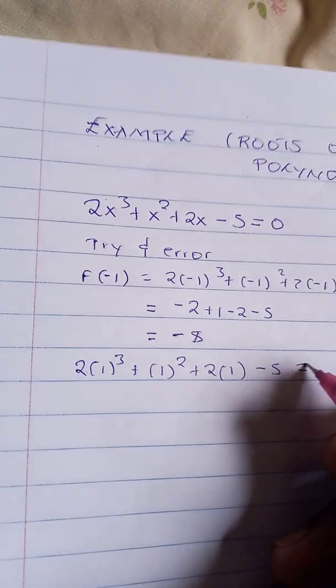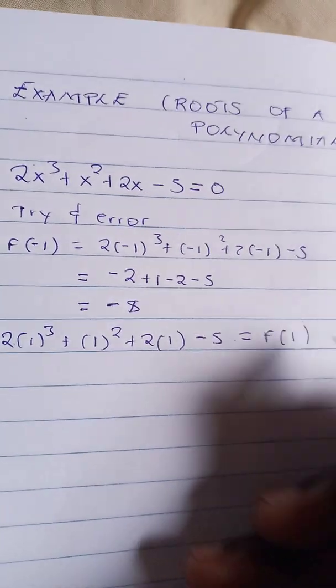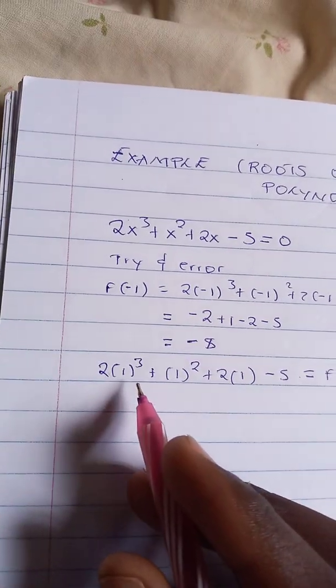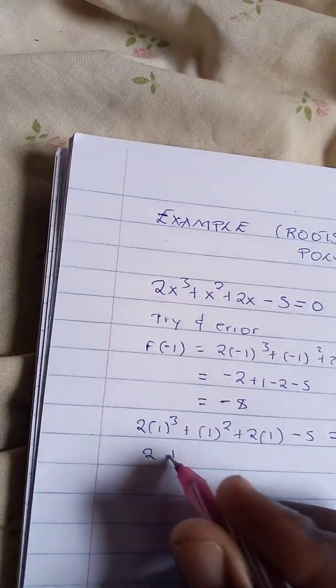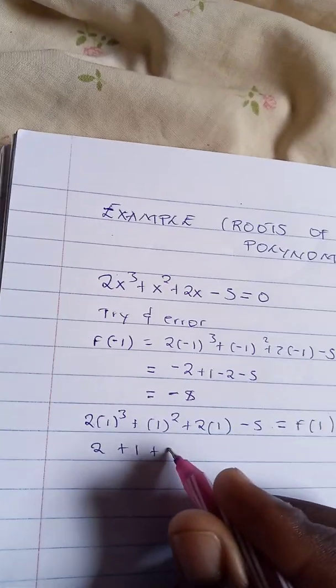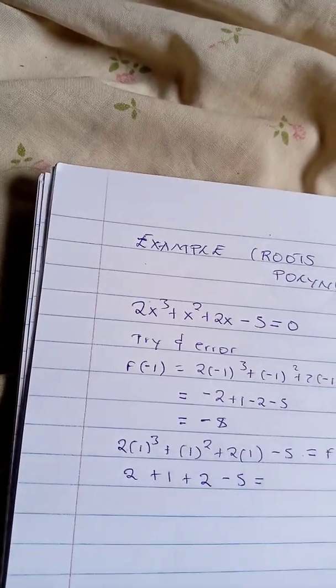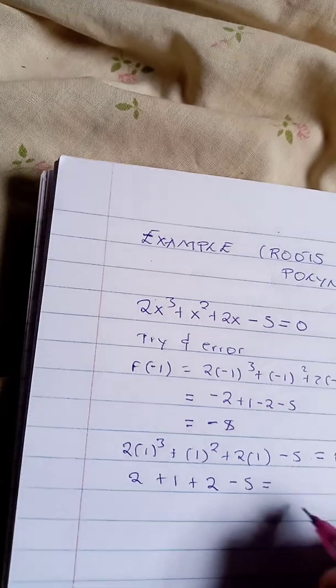So x to the power 2, it is 1 to the power 2. By trying out 1: 2(1)³ + (1)² + 2(1) - 5. That will give us 2 + 1 + 2 - 5. So 2 + 1 is 3, plus 2 is 5, and 5 - 5 equals 0.